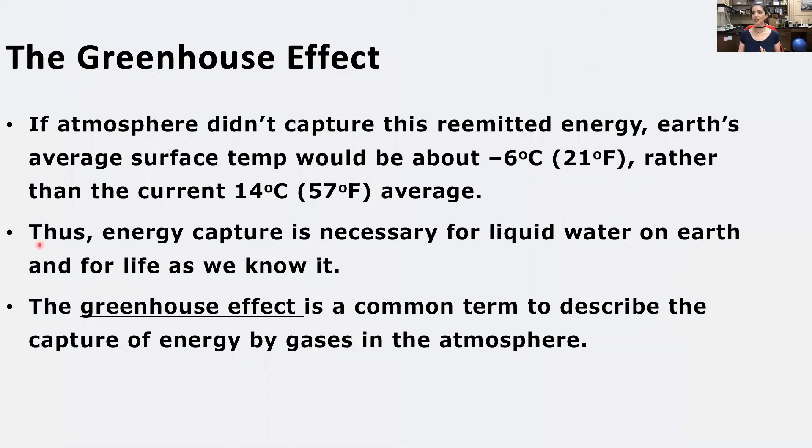Talking about the greenhouse effect, if we did not have the greenhouse effect, the earth's surface temperature would be about 21 degrees Fahrenheit on average or minus six degrees Celsius. Instead, what we have is about 57 degrees Fahrenheit on average or 14 degrees Celsius. The difference is made entirely possible through the greenhouse effect. Thus, energy capture through the greenhouse effect is necessary for liquid water on earth to be here. If we did not have liquid water on earth, we wouldn't have life as we know it. So we should actually thank the greenhouse effect for keeping our surface warmer than it normally would be.